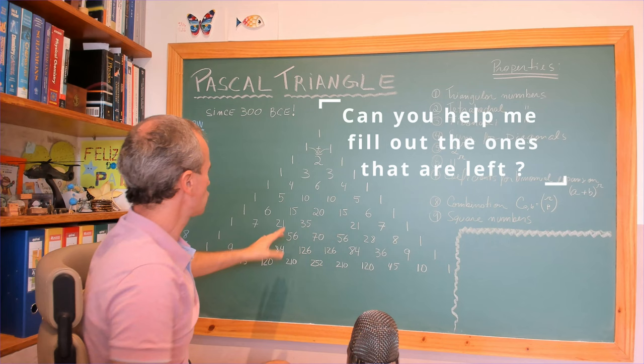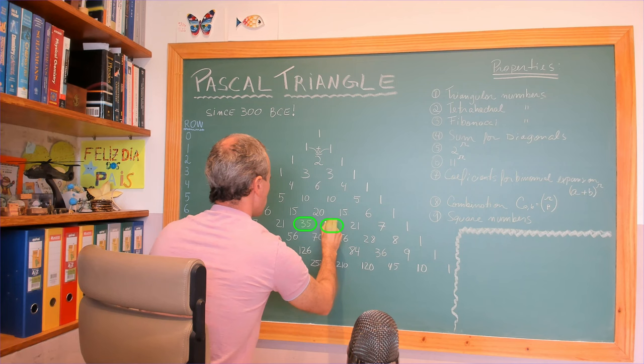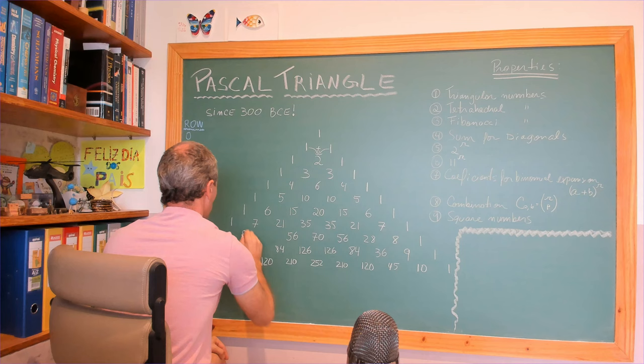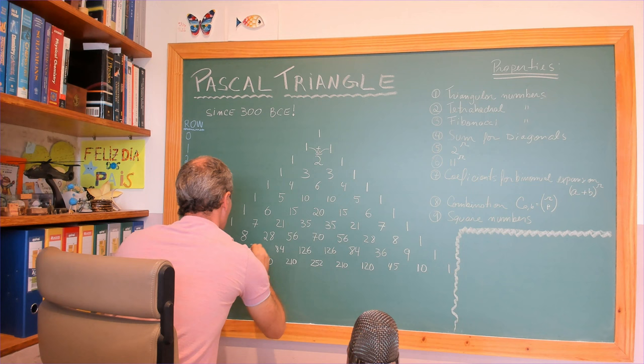Can you see? We are going to use symmetry here. One, seven, twenty-one, thirty-five — those two must be thirty-five. Again, one, eight — this one must be eight. Twenty-eight, so this one must be twenty-eight. Now nine, thirty-six — this last one is going to be thirty-six. Okay, this is Pascal's Triangle and I'll show now some properties.